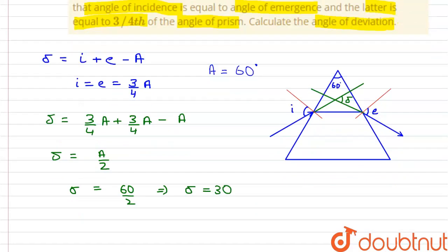Therefore, on calculation, we can say that the angle of deviation which is represented by delta is equal to 30 degrees.